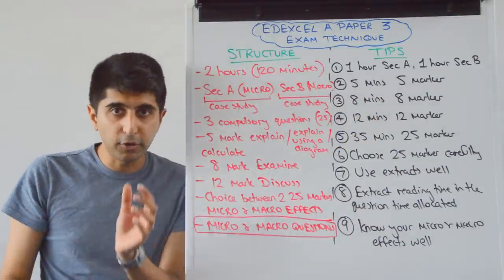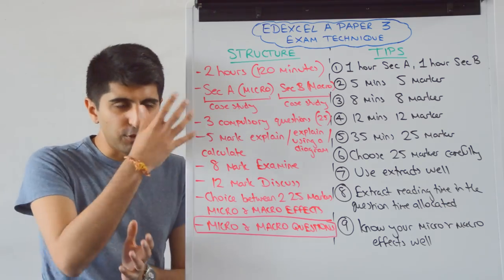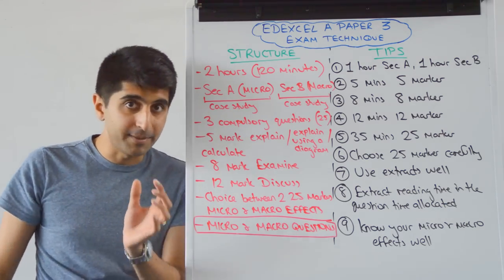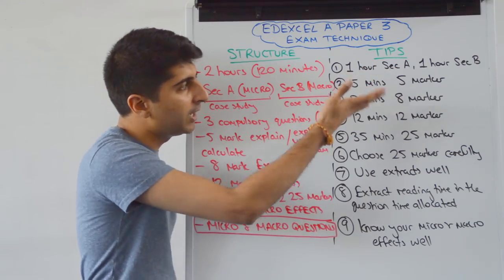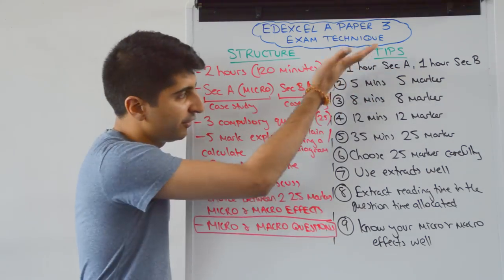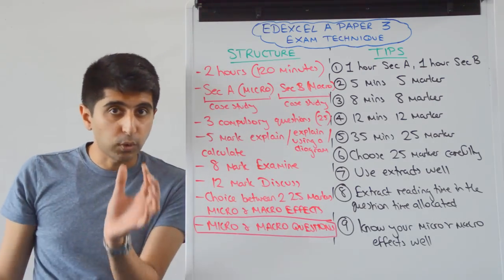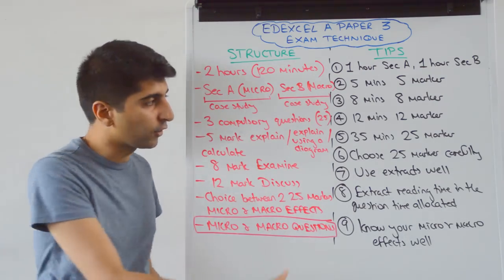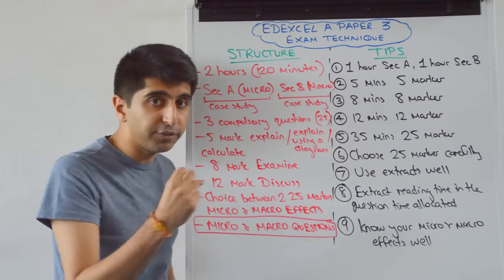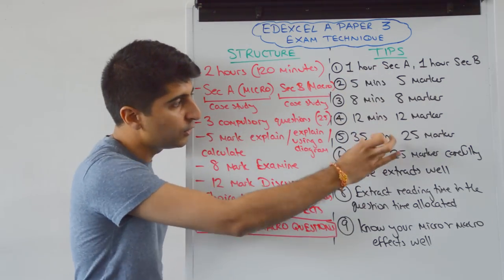These questions are supposed to be short — they're not supposed to make you write pages and pages. They're meant to be simple, so don't waste time on them. A minute-a-mark for those three questions. Give yourself 35 minutes for the 25-marker though — you've got to do a great job on it. Don't waste time on the shorter questions and lose time there.